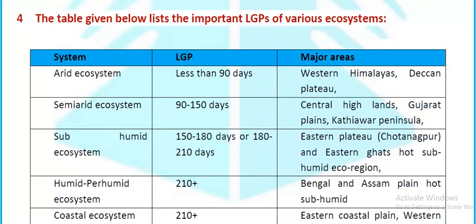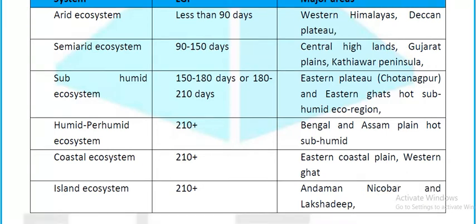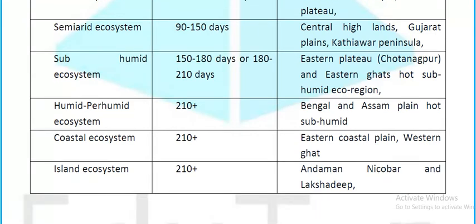The table lists the important LGPs of various ecosystems: Arid ecosystems have less than 90 days LGP, found in Western Himalayas (Jammu & Kashmir — cold) and Deccan Plateau. Semi-arid ecosystems have 90 to 150 days, covering Central Highlands, Gujarat Plains, and Kathiawar Peninsula. Sub-humid ecosystems have 150 to 180 days and 180 to 220 days, covering Northern Plains, Eastern Plateau, Chotanagpur, Eastern Ghats. Humid/per-humid ecosystems have 210+ days in Bengal and Assam Plains. Coastal ecosystems include Eastern Coastal Plains and Western Ghats; island ecosystems also included.